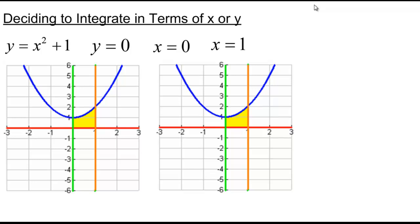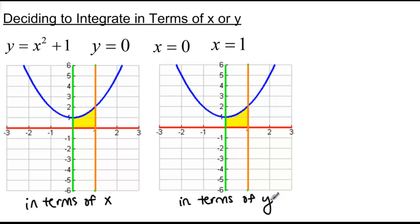Let's start by looking at the example y equals x squared plus 1, above the line y equals 0, between x equals 0 and x equals 1. I've drawn this picture twice because I want to talk about what this looks like if we integrate in terms of x and if we integrate in terms of y. If we integrate in terms of x, we're drawing vertical rectangles and doing top minus bottom — the top function is the blue function and the bottom function is the red function. So this is actually very straightforward to do.